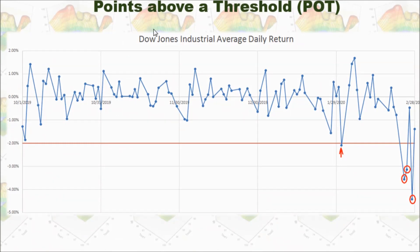So what are the points above the threshold? In this method, we've set up a threshold. In this example, I set negative 2% as our threshold. You can see if the daily return is below this threshold, I'll pick up the data point.